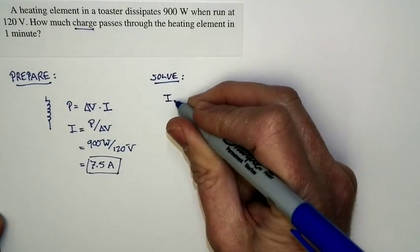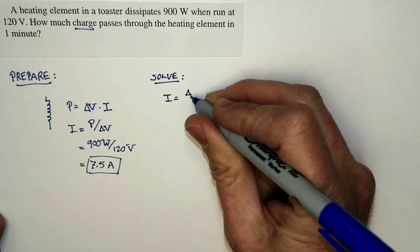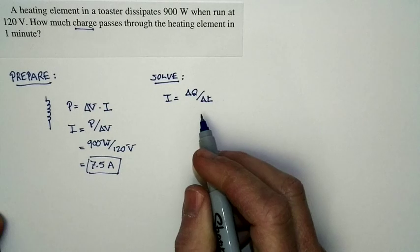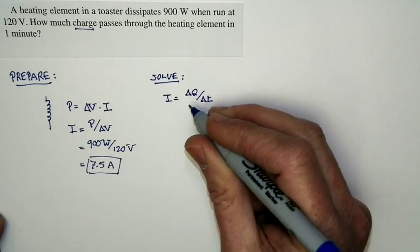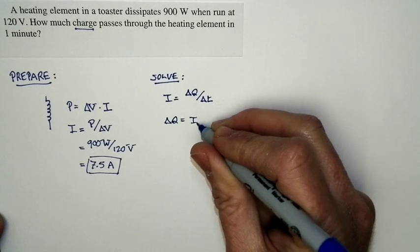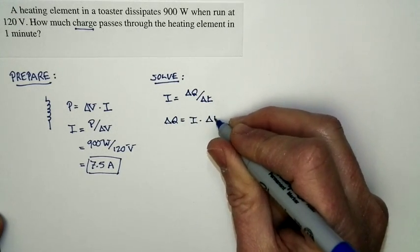Well, the definition of current is this. Current is just equal to delta Q divided by delta T. It's how much charge passes a particular point in a certain interval of time. We're looking for the charge. The charge that flows is just equal to the current times the time interval.